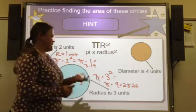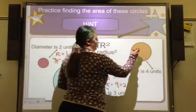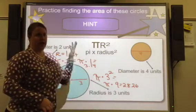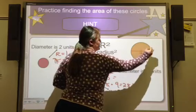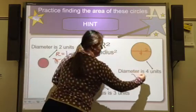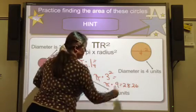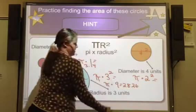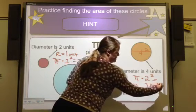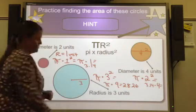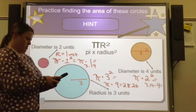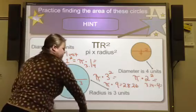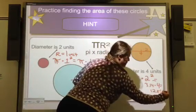And then my final example says the diameter is 4 units. So all the way across is 4. My formula though is radius. So I need to find half of the diameter, which is only 2. So pi times 2 squared, which is going to be 3.14 times 4. And that's 12.56 again.